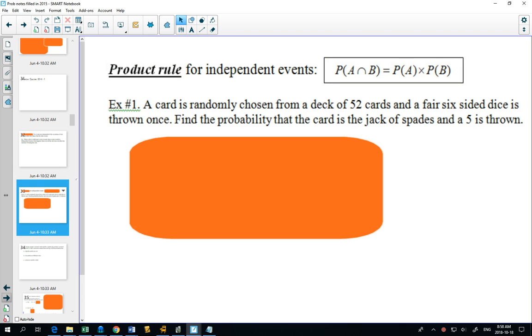We have some mathematical rules. The first one is the product rule. When you're trying to find the probability of two independent events, you can just find the probability of one and multiply it by the probability of the other.